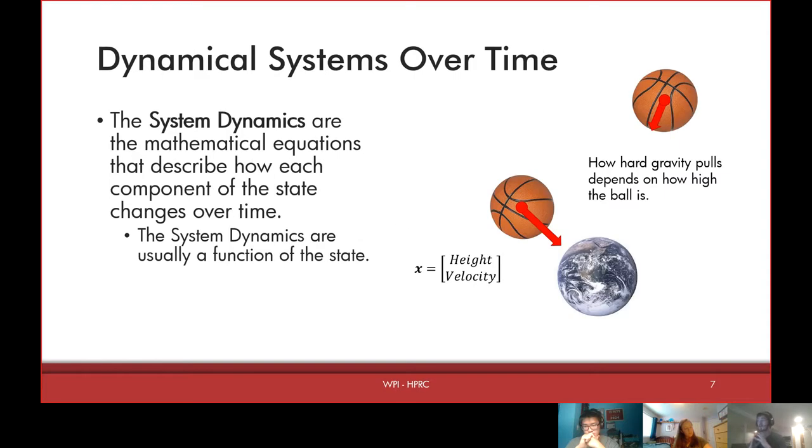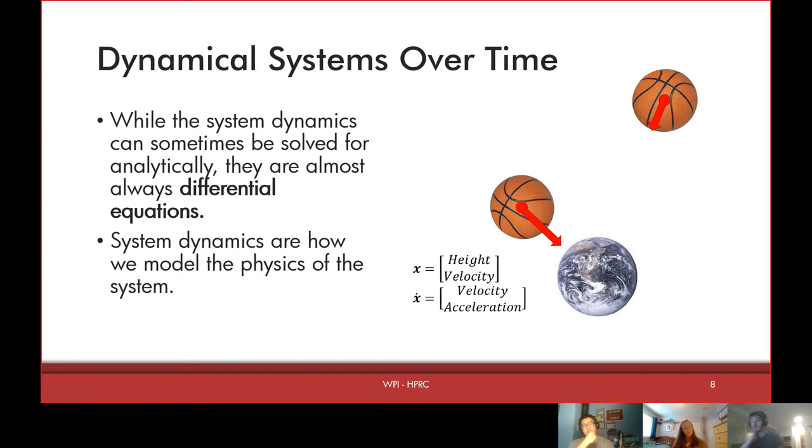The way we actually use a state space is they all have some kind of system dynamics, which essentially describe how the state changes over time. And they're pretty much always a function of the state, sometimes of time. For example, the system dynamics of our basketball, the main driving factor is gravity. That's what causes the different states to change. And in this case the system dynamics do depend on the state because gravity acts differently depending on your height.